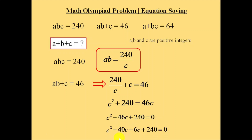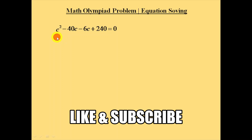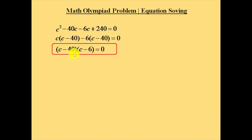Split this 46c into 40c and 6c. That will become c squared minus 40c minus 6c plus 240. From the first two terms, take c as common, which will give c into c minus 40. From the last two terms, take 6 as common, which will give c minus 40.